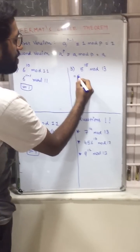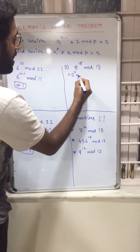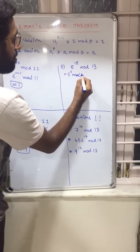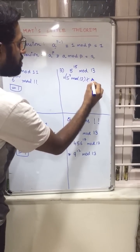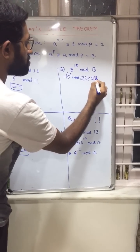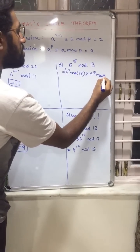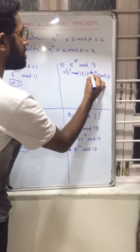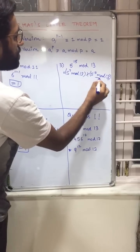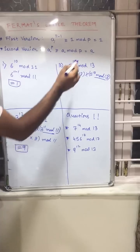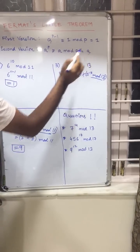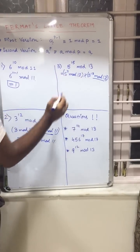So we can write it as 5 square mod 13 into 5 raised to 13 mod 13. So here again we can observe that this equation matches the second version one. So our answer will be equal to a, and here our a is 5.